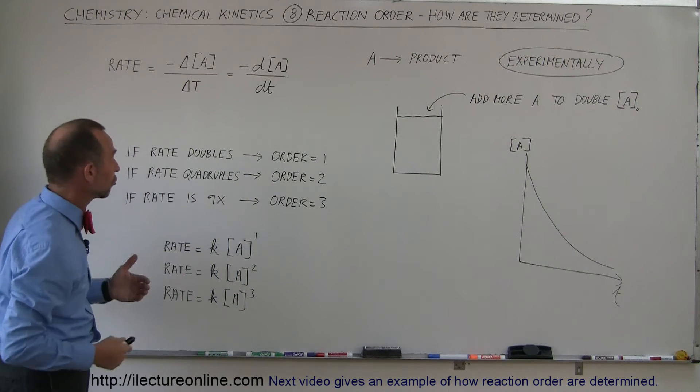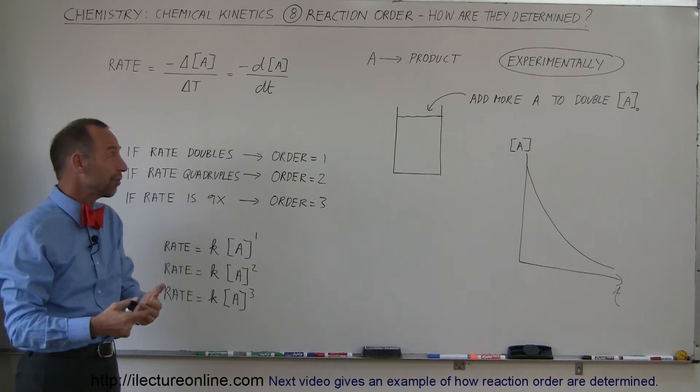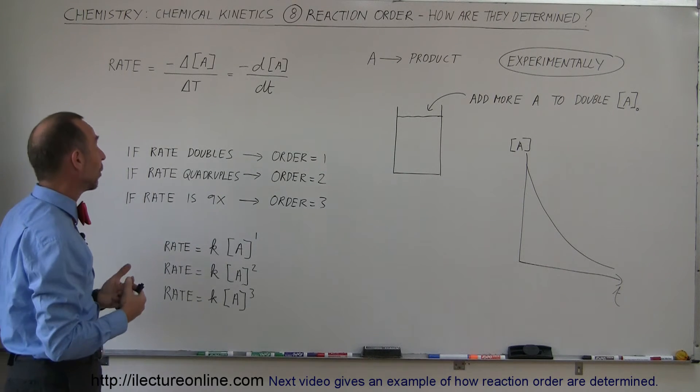If we double the concentration and find that the rate doubles—meaning the reaction goes twice as fast—we know the order with respect to that reactant is one.